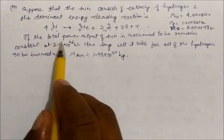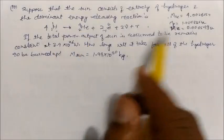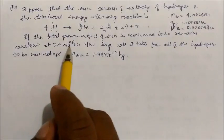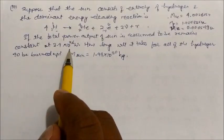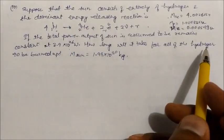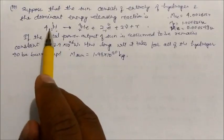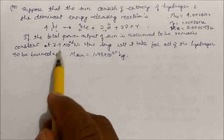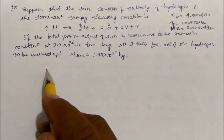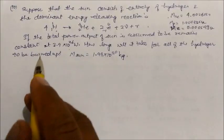The question asks: if the total power output of the sun remains constant (the power reaching Earth per second is given in joules), how long will it take for all the hydrogen to be burned up into helium? The mass of the sun is also given.